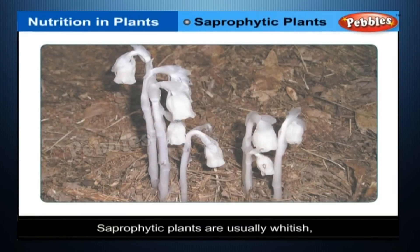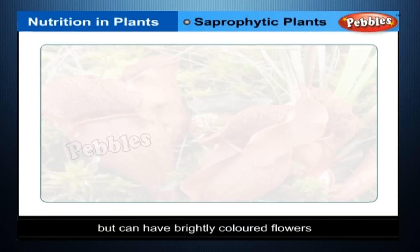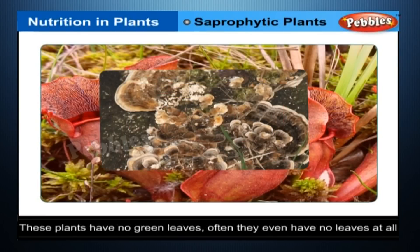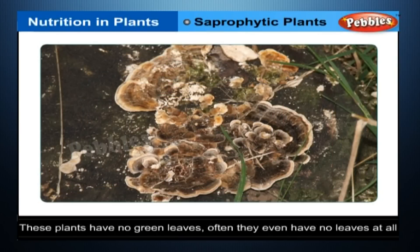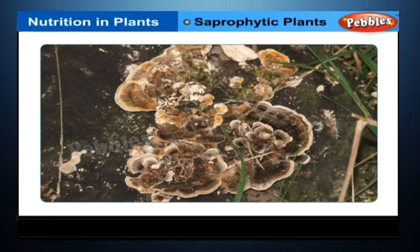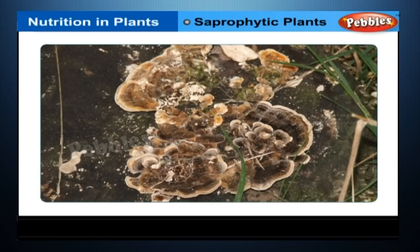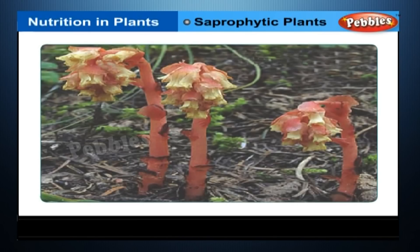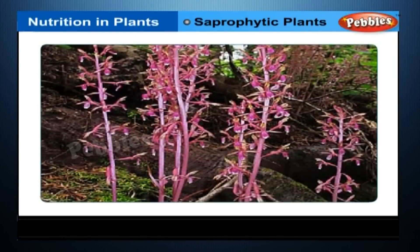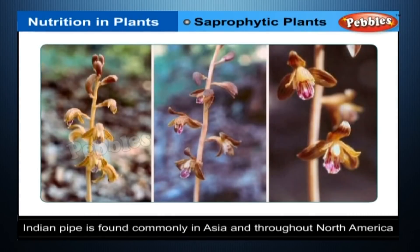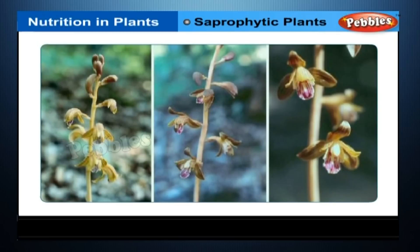Saprophytic Plants. Saprophytic plants are usually whitish but can have brightly coloured flowers. These plants have no green leaves — often they have no leaves at all. Saprophytic plants live off rotting material. From the Greek: sapros means rotting and phyton means plant. They grow in places with lots of rotting dead leaves, often in deep shade in tropical forests. Some examples are Indian pipe and coral root. Indian pipe is found commonly in Asia and throughout North America; coral roots are found in forest environments around the world.